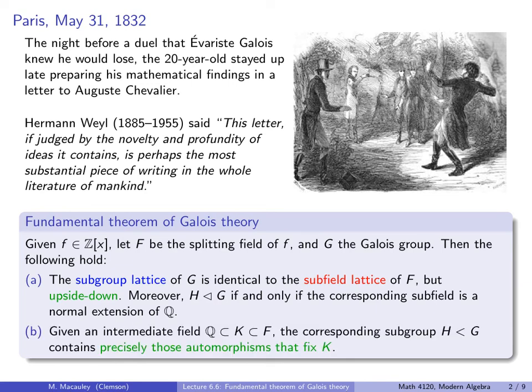Finally, given an intermediate field K — something bigger than Q but smaller than F — the corresponding subgroup H contains precisely those automorphisms that fix K. This is something we'll explain better in the next slide with an explicit example.